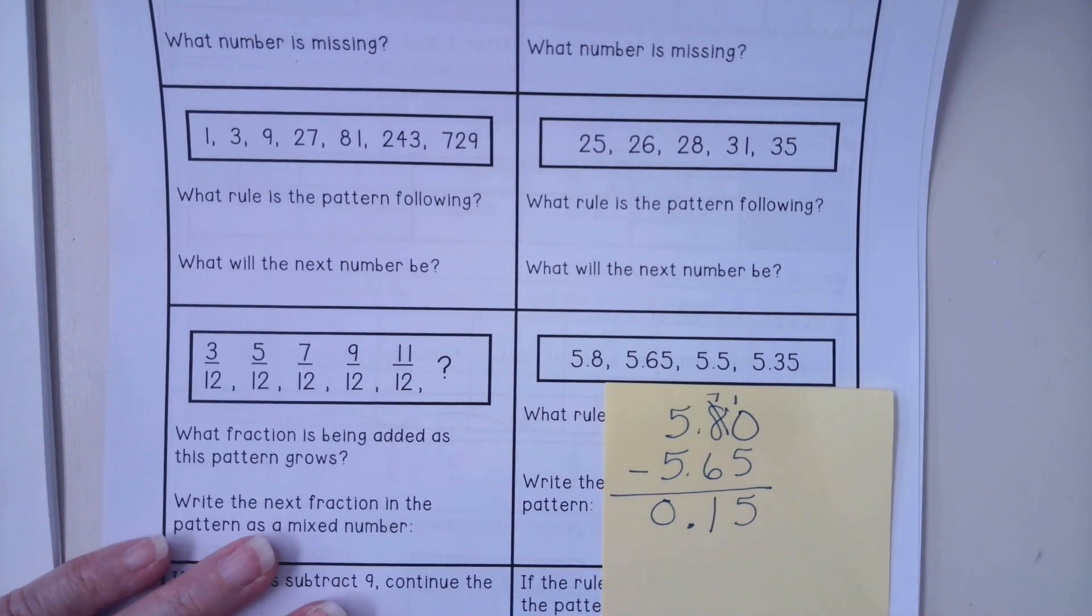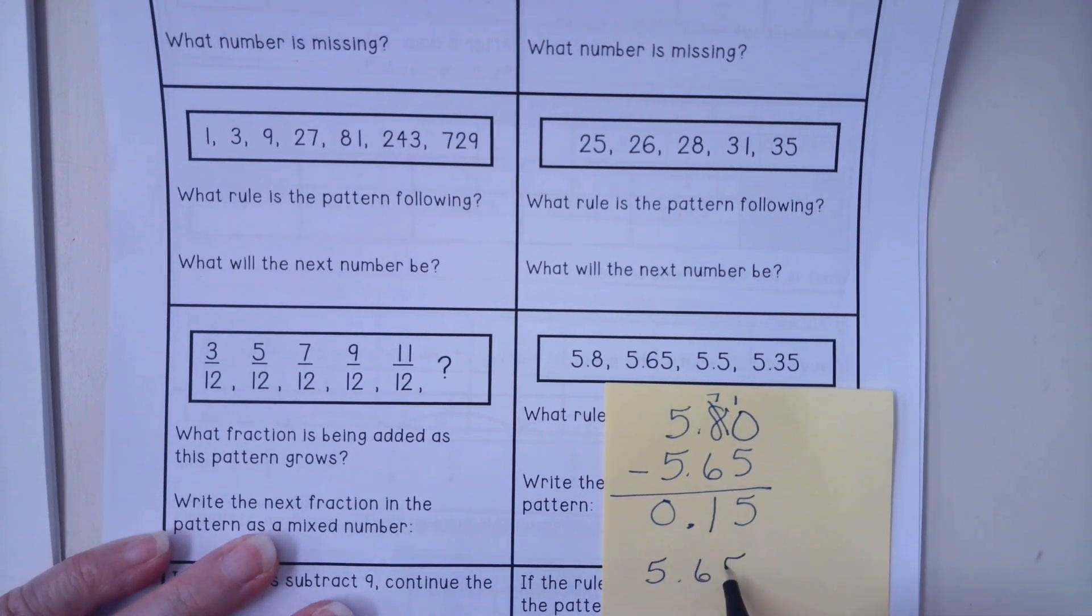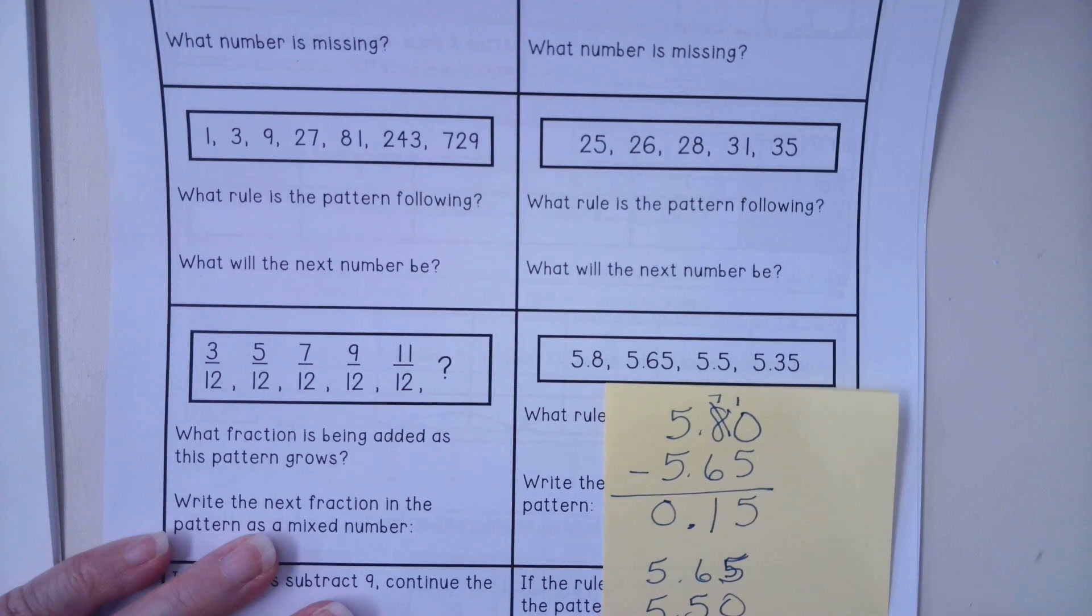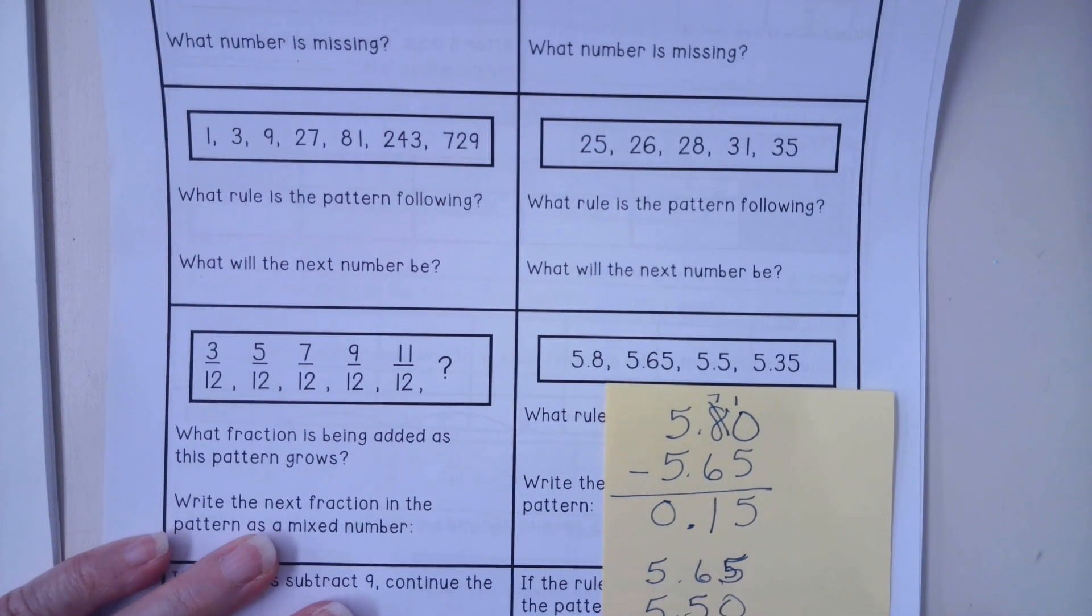So we need to figure out if that is going to be consistent. So I'm going to do it one more time, 5.65 and I'm going to subtract out 5.50 and see if I get the same number. And I do.